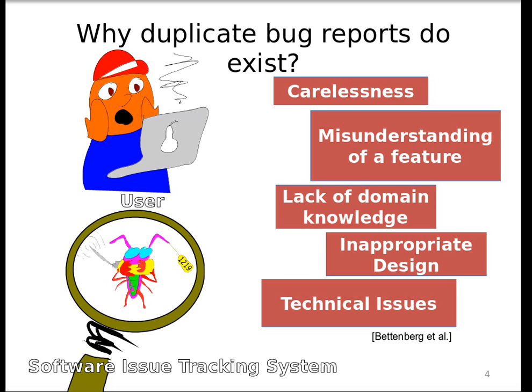Why do duplicate bug reports exist? Researchers such as Bettenburg et al. suggest a wide variety of issues, ranging from carelessness to misunderstanding features, technical issues with the software issue tracker system, or inappropriate design. A lot of this comes down to a lack of domain knowledge — users are not software experts, they don't share the same domain knowledge as developers, and so what they put into the bug tracker might not be described the same way a developer would describe it.